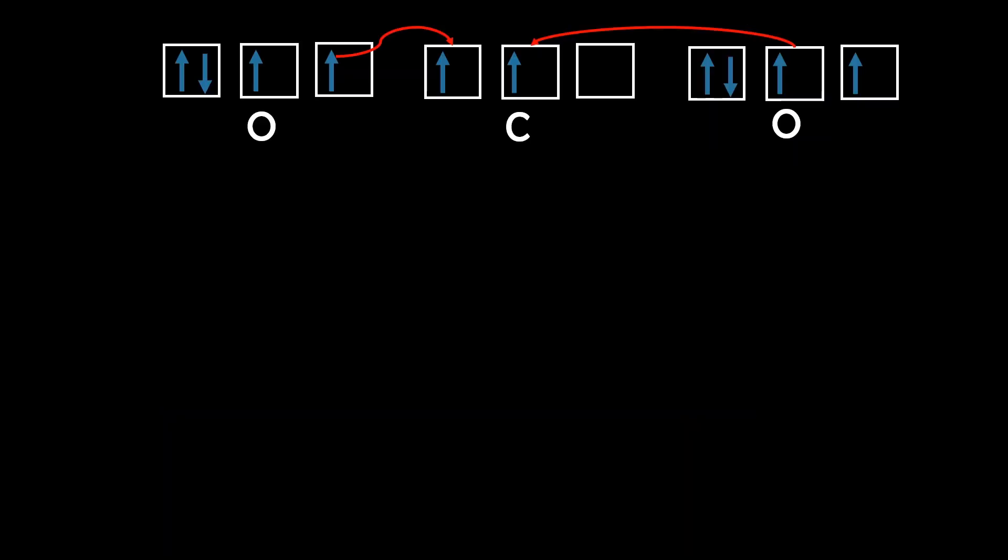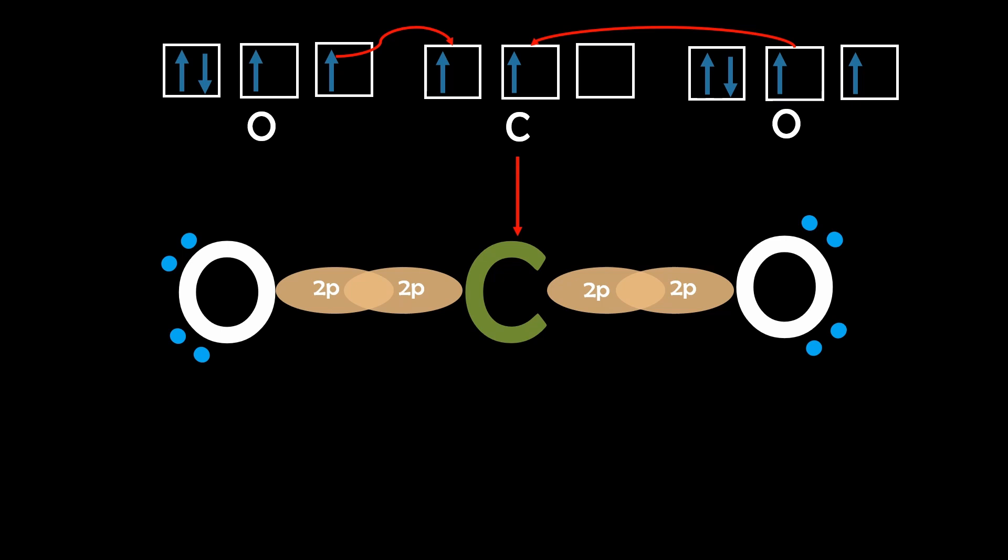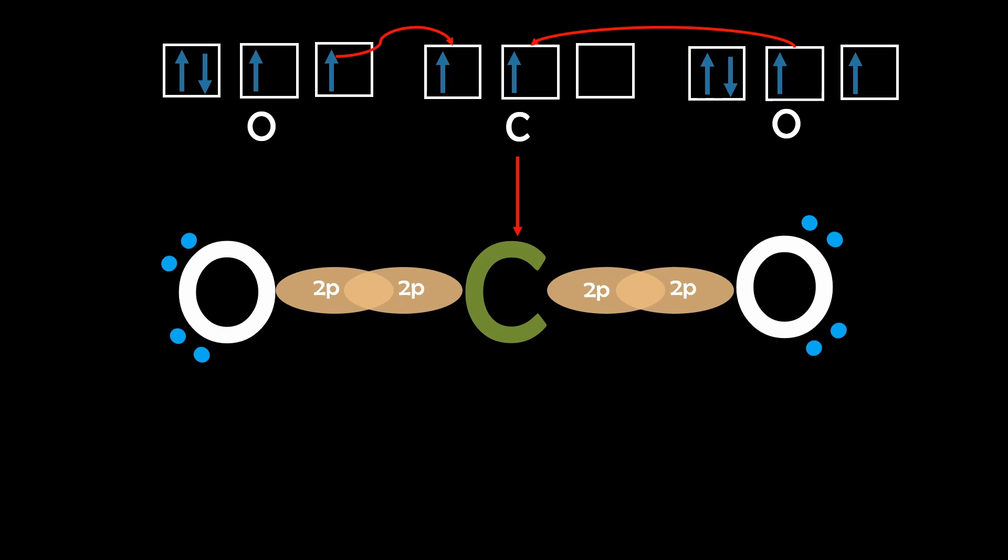Therefore, a p-orbital from each oxygen and carbon can overlap without causing this anti-bonding orbital while creating sigma bonds of lower energy, which stabilizes the molecule. But if we look at the molecule according to the octet rule, it needs to form four bonds in total.